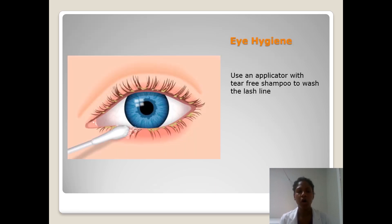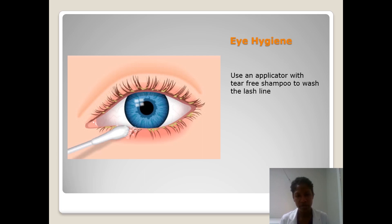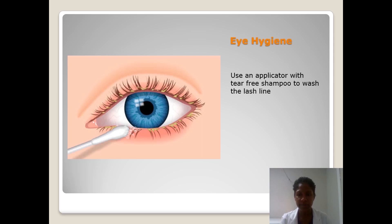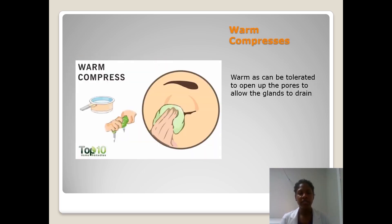So how do we treat it? Treatment starts with eye hygiene — you have to wash the eyelash line maybe twice a day to try to clean the debris or oil from the blocked pore. We'll use a Q-tip — properly called an applicator — with some tear-free baby shampoo, and just wash the eyelash line to hopefully clear whatever is blocking it. Do that twice a day. Next, we all know that a warm compress on our skin opens up pores, so we're going to do warm compresses two to three times a day on the eyelid to open the pores and allow the oils to drain.